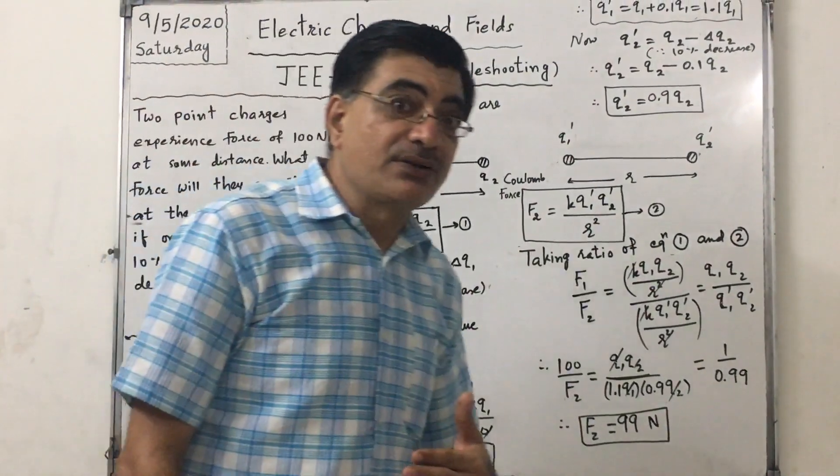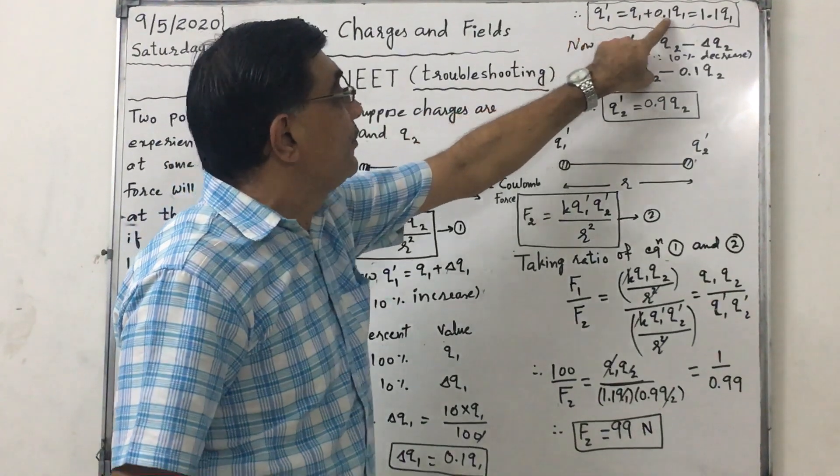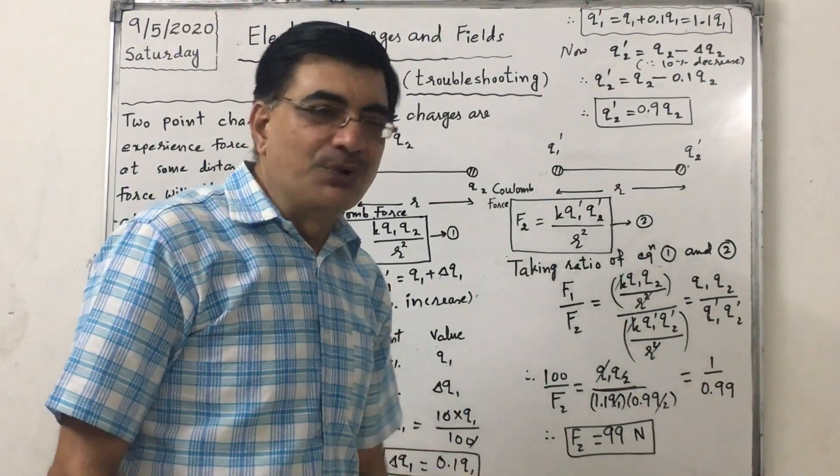That is the increase in the first charge. So the final value of the first charge is Q1 plus 0.1 Q1, that is 1.1 Q1.